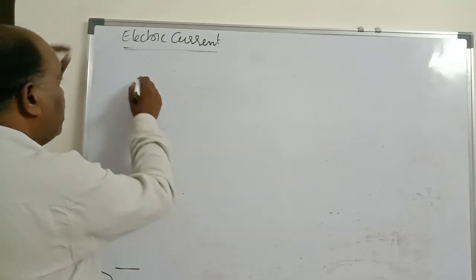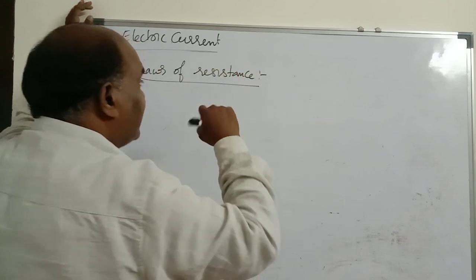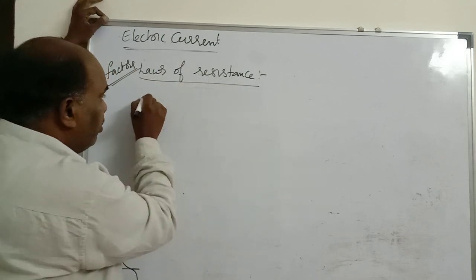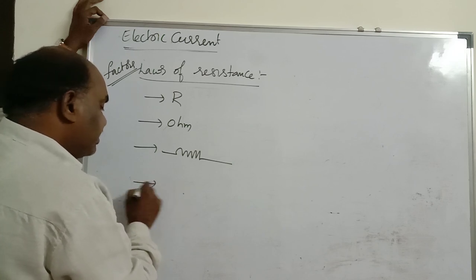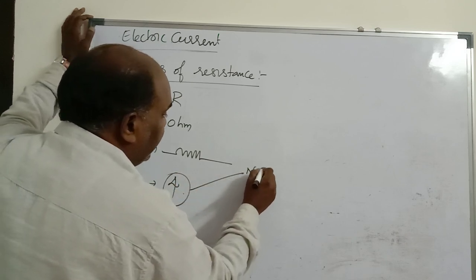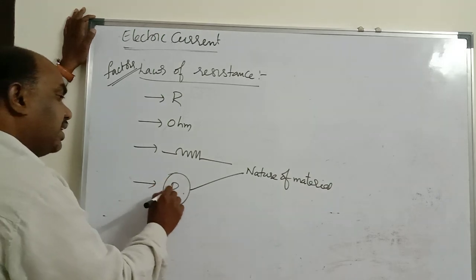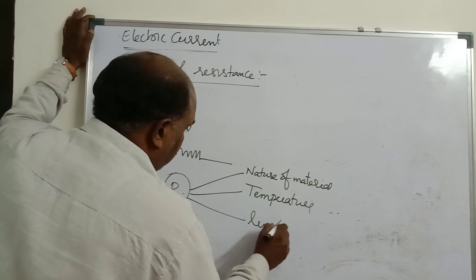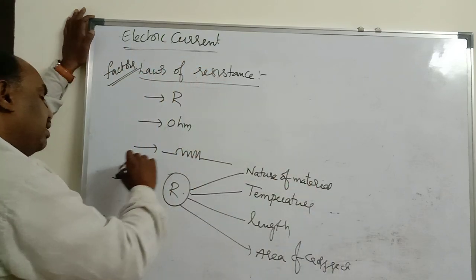Next: laws of resistance, also called factors affecting resistance. Resistance depends on four factors. Number one: nature of material — if material changes, resistance also changes. Number two: temperature. Number three: length. Number four: area of cross section, meaning thickness.